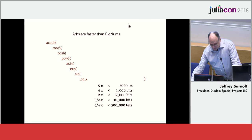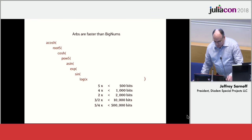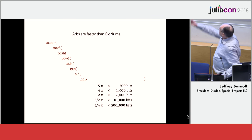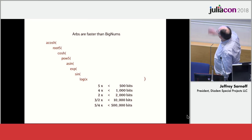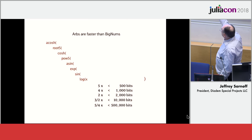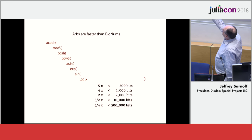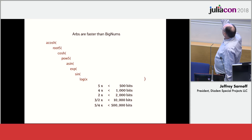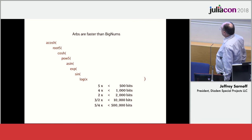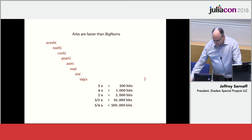I said that they're faster than BigNums. Here's my test function. You get the relative speed-up of the Arb floats to BigNums at different levels of precision. Not bad.